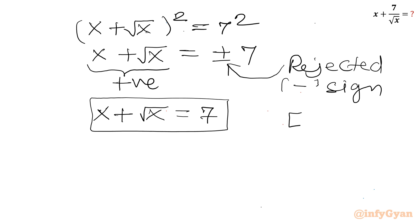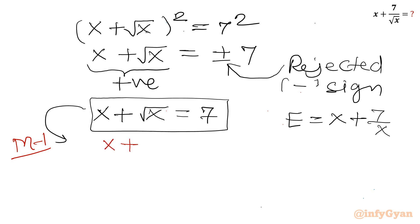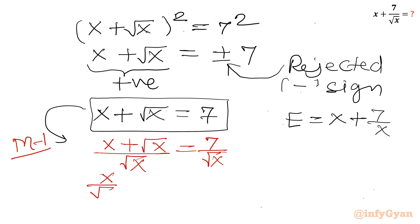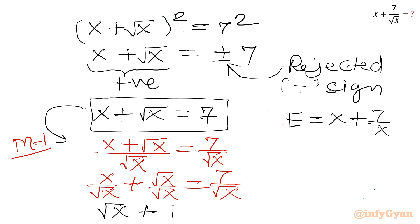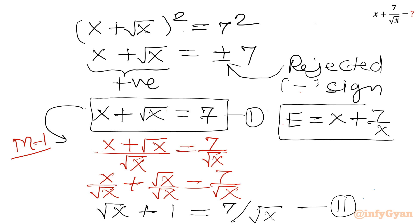Now we have to evaluate the expression (x + 7) / √x. This is approach number 1. I will divide both sides of x + √x = 7 by √x, splitting the numerator: x/√x + √x/√x = 7/√x. That simplifies to √x + 1 = 7/√x. I'll call x + √x = 7 equation one, and √x + 1 = 7/√x equation two.